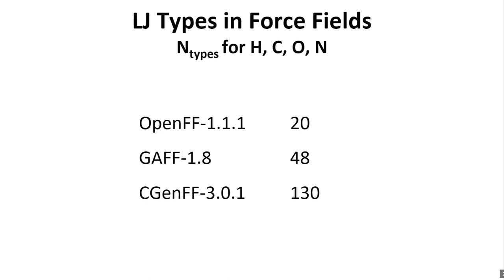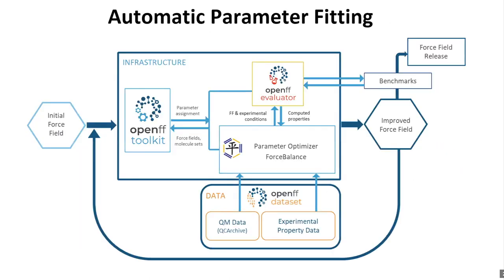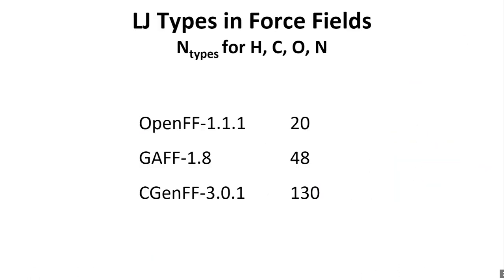In GAFF, certainly many of the nitrogen parameters are identical and probably should not be viewed as independent types, even though they're listed as independent. So there may not really be so many independent Lennard-Jones types in these other force fields, but they're listed that way. And when it comes to doing an optimization, it's not entirely clear which ones should be considered identical and kept together, and which should be allowed to vary independently.